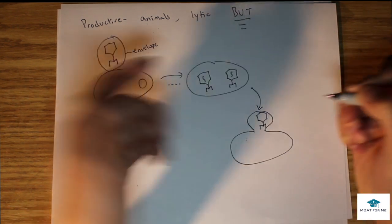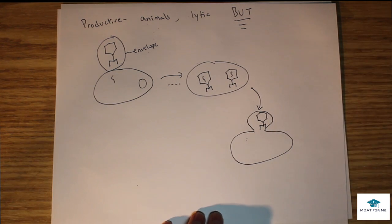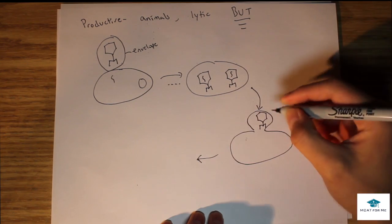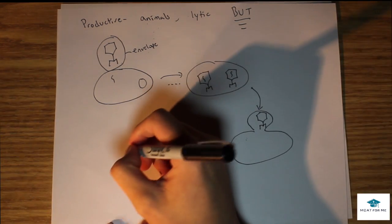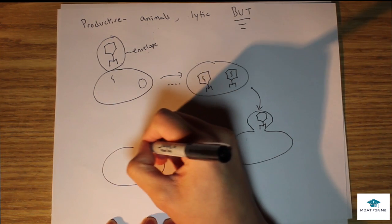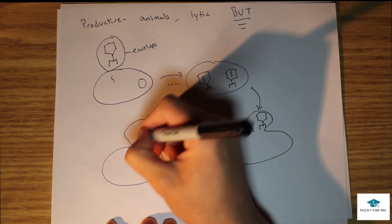They start budding off of the cell, they start budding off of the cell membrane as you know animal cells have a plasma membrane surrounding them. They start budding off like that and eventually they'll just get pinched off.